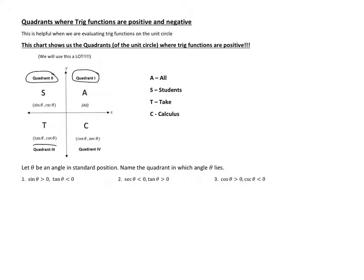So quadrant 3, we have a T. That stands for tangent. So tangent and cotangent are reciprocals. They both are positive in quadrant 3. And then finally in quadrant 4, the C stands for cosine. Cosine and secant are reciprocals. So they both are positive in quadrant 4.